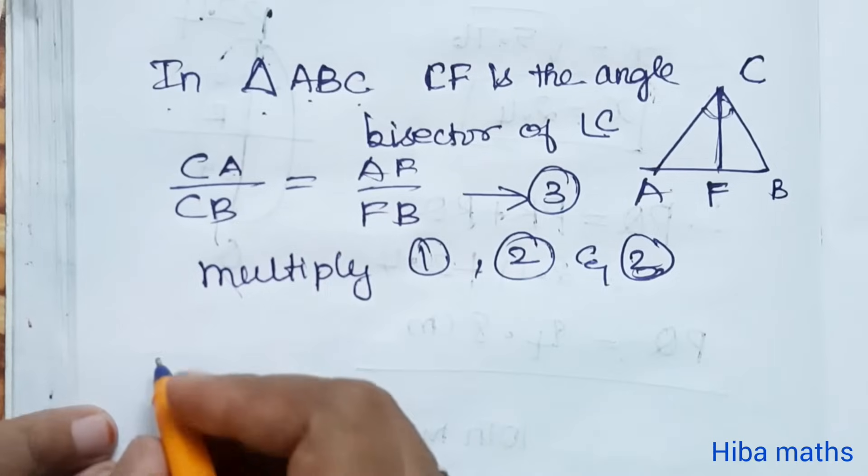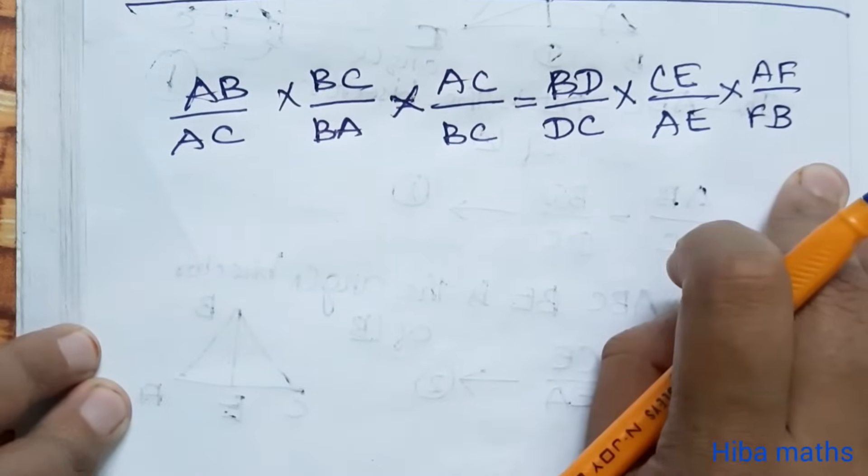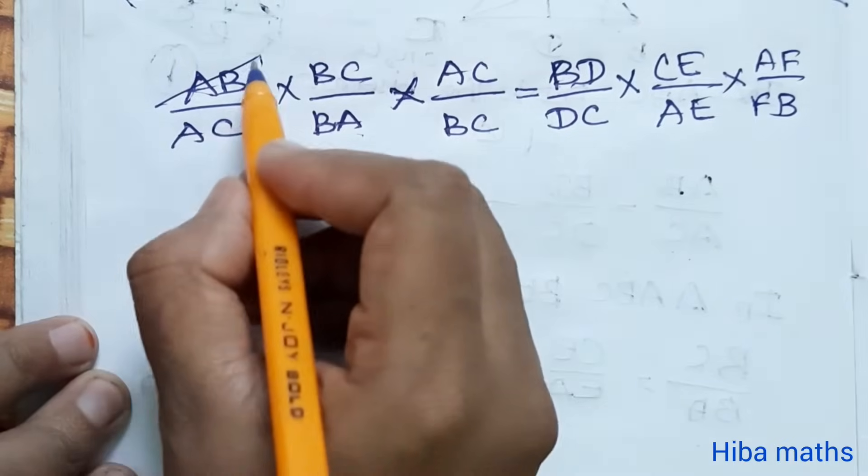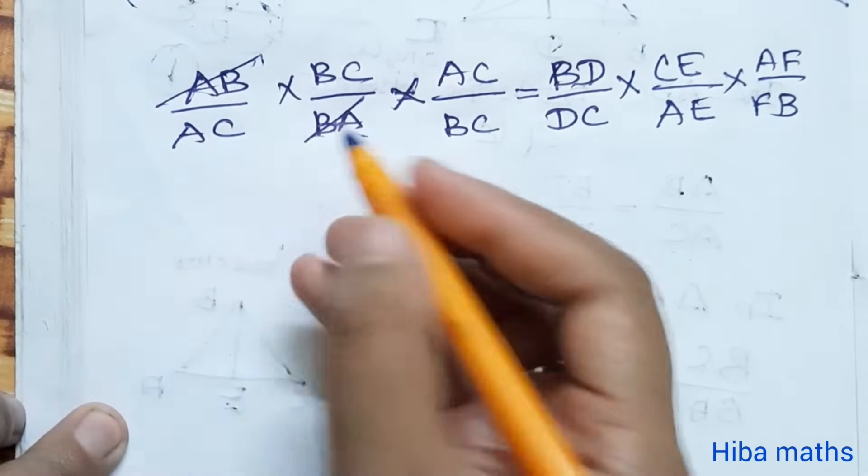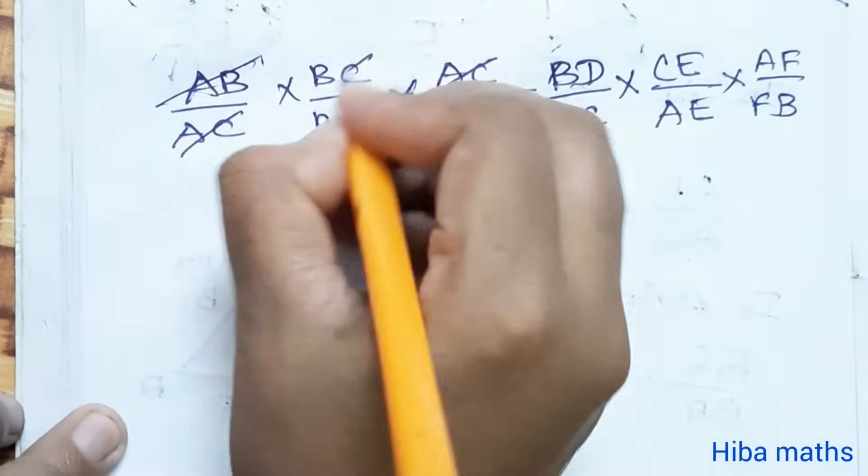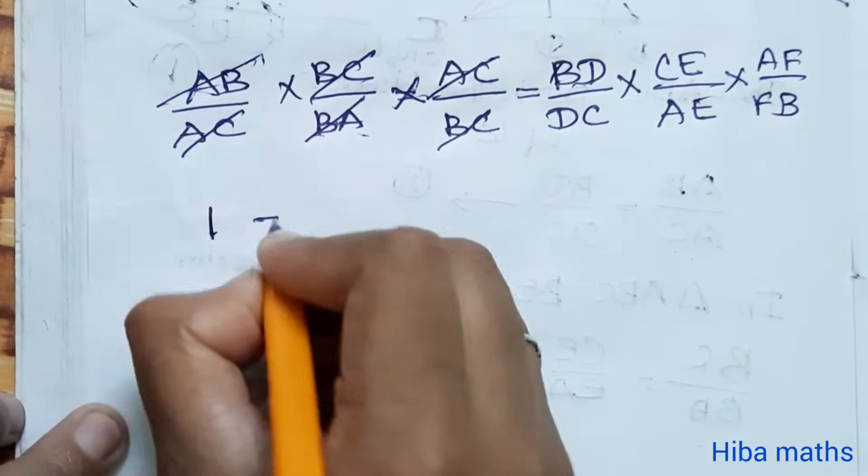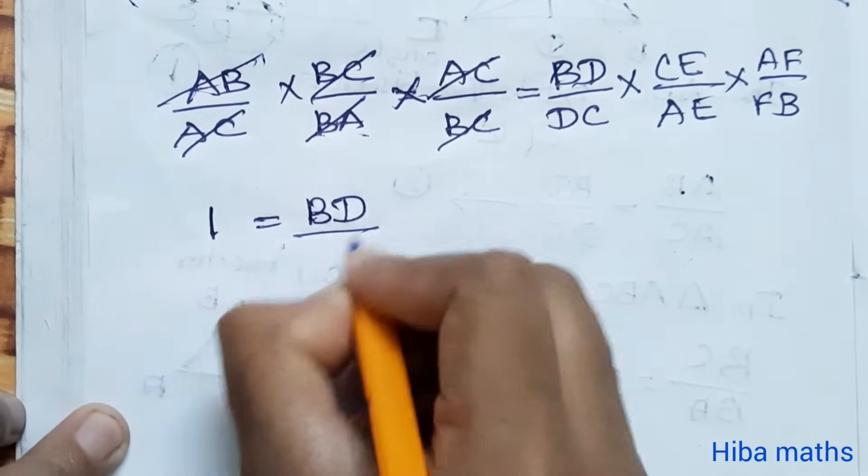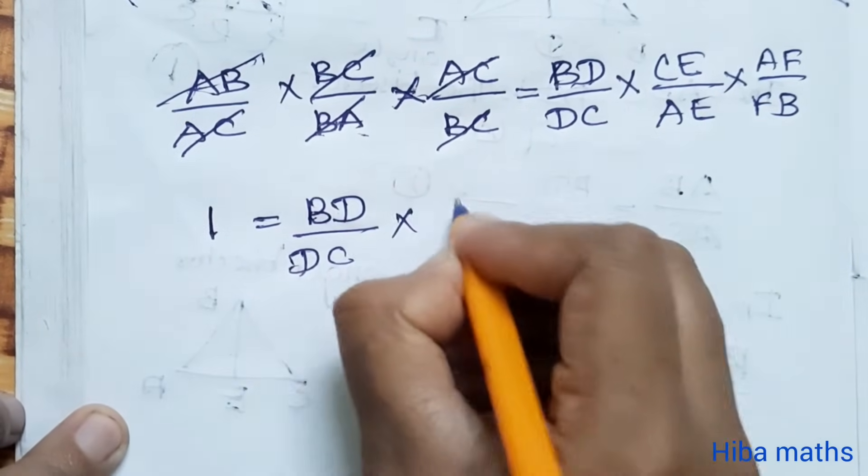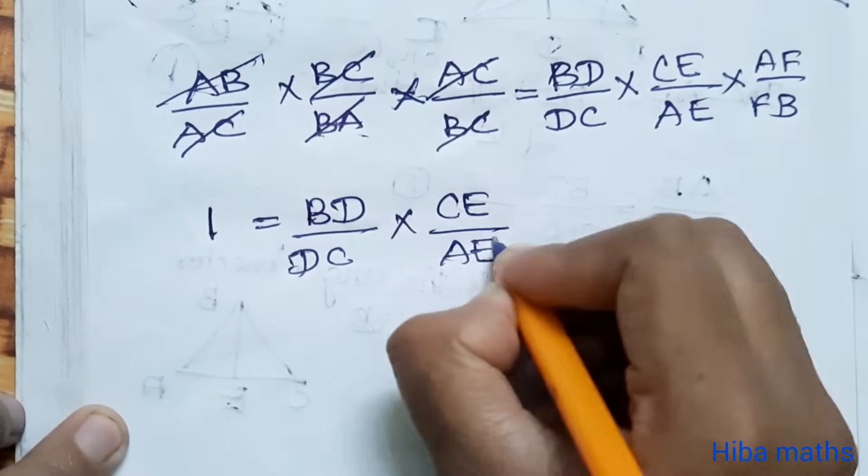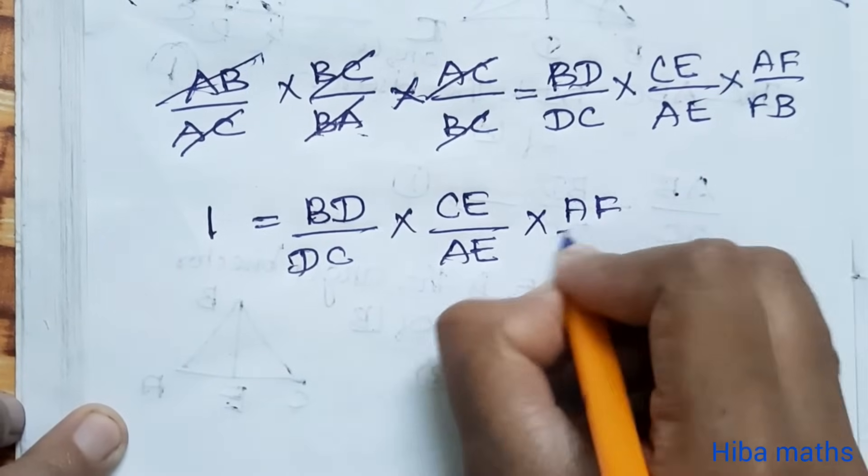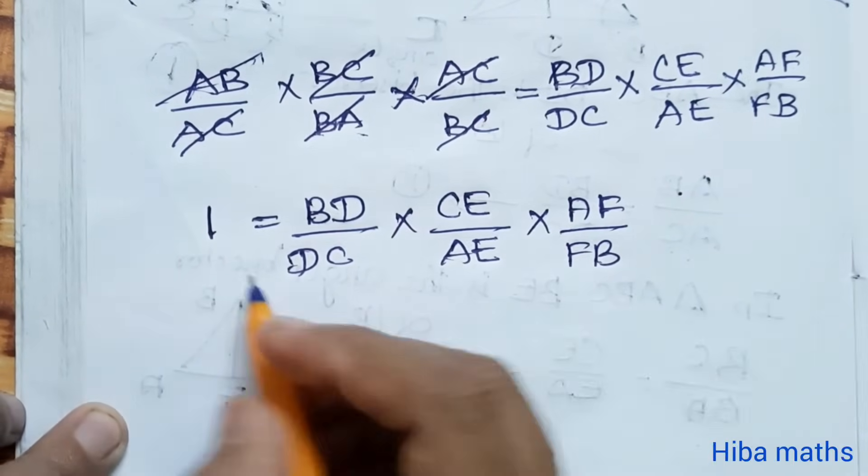We multiply the 3 equations. AB cancels, AC cancels, BC cancels. So this is all cancellation.